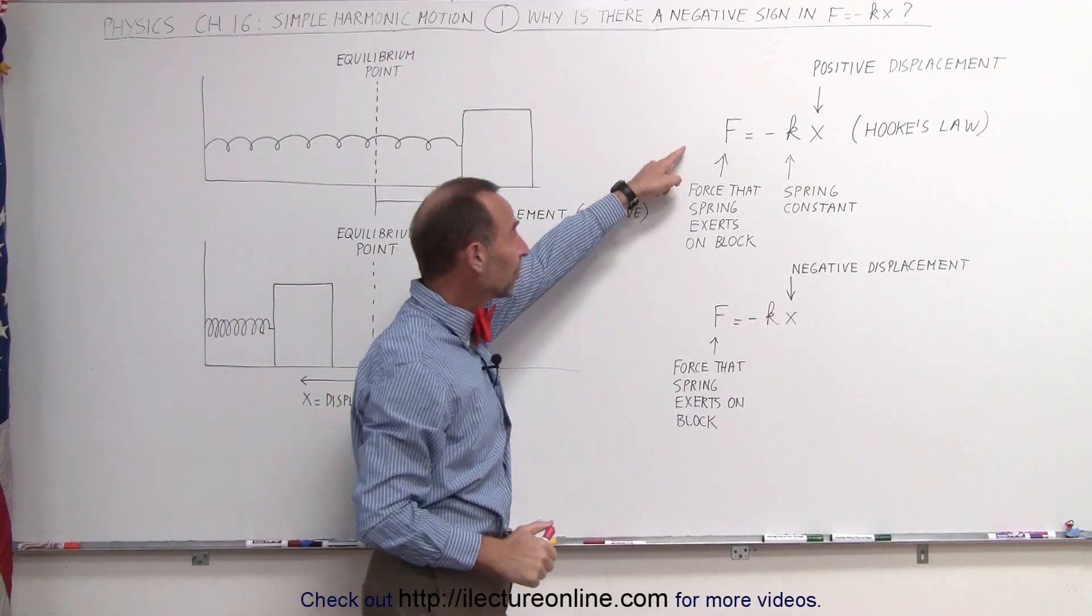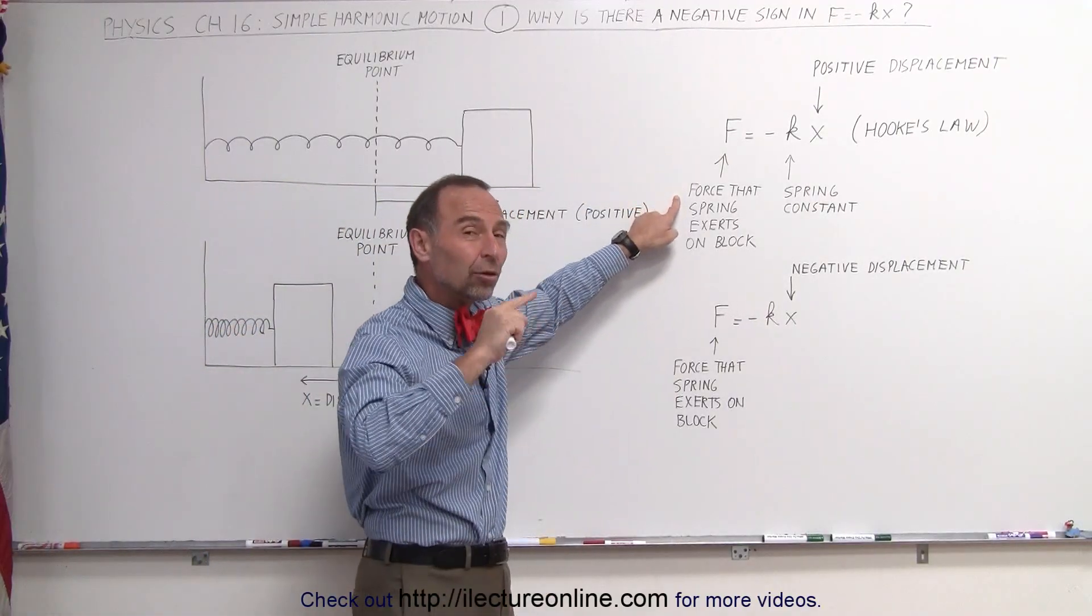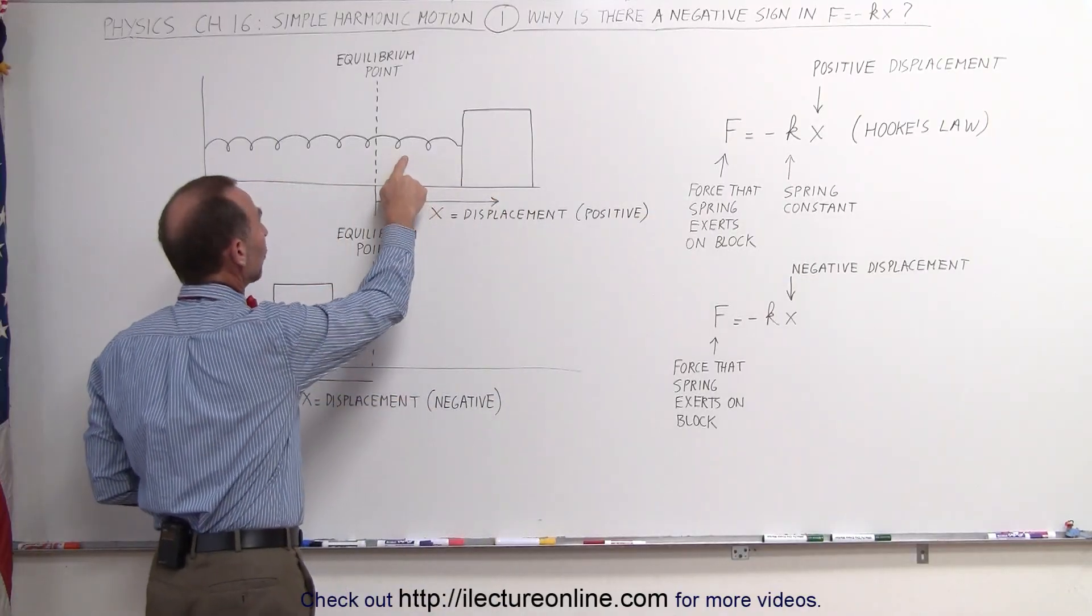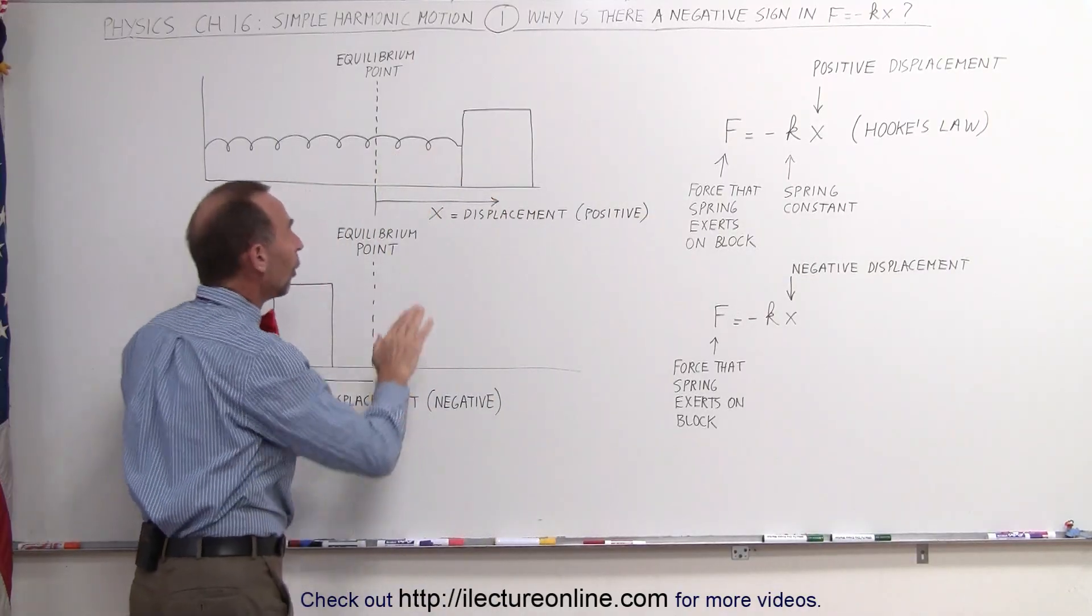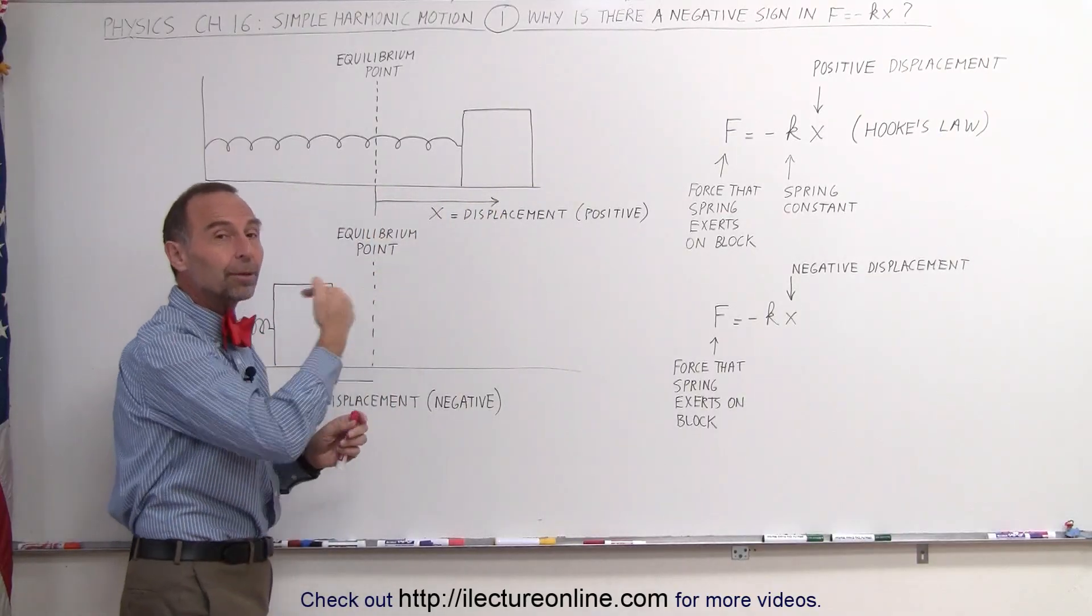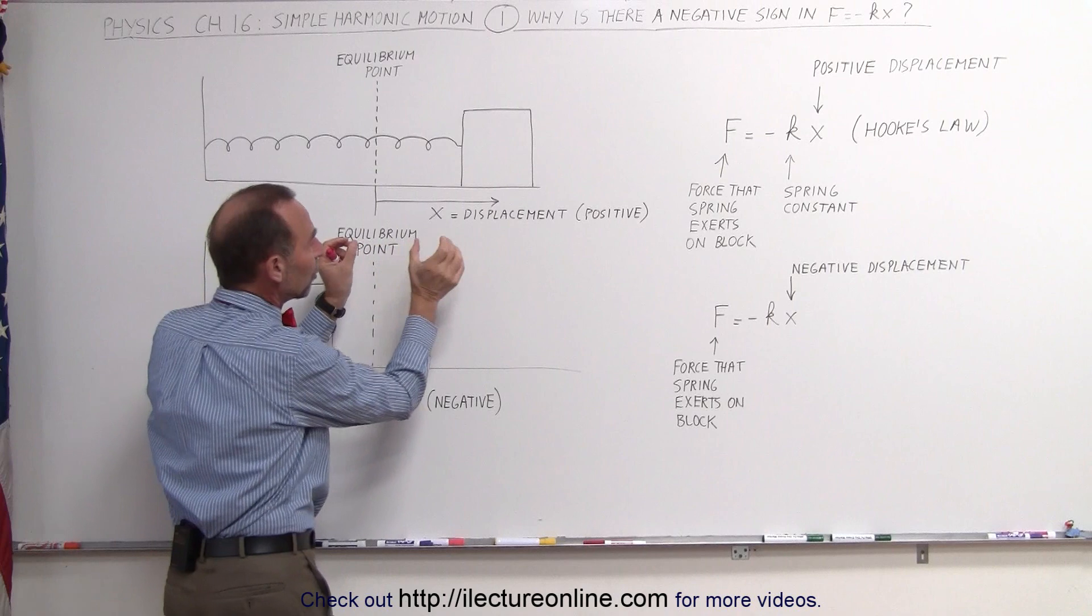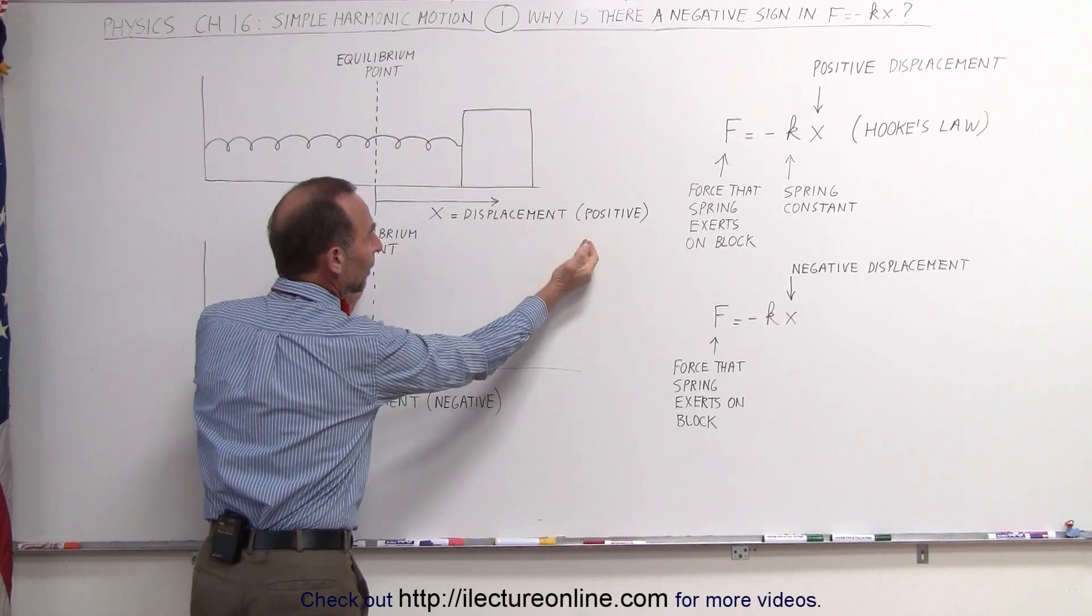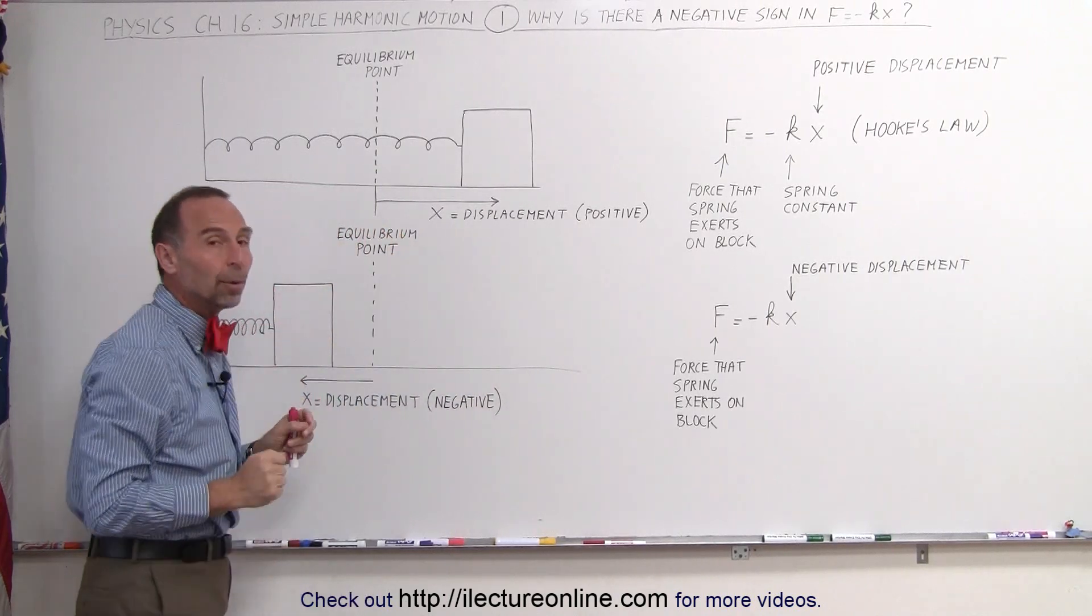Now, F represents the force that the spring exerts on the block. So what is the direction of the force that the spring exerts on the block? Once the block is past the equilibrium point, now the spring is pulling back on the block. The block is being slowed down, eventually will come to a stop, and then the spring will accelerate back towards the equilibrium point.